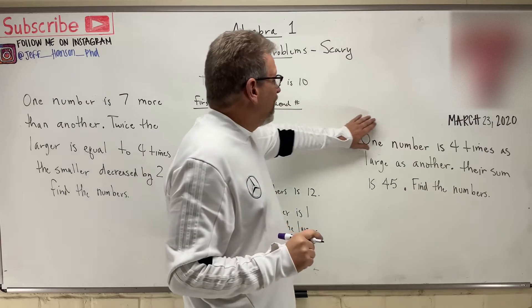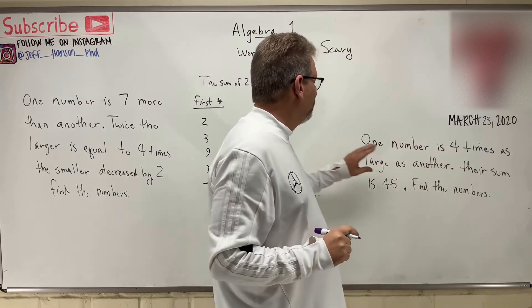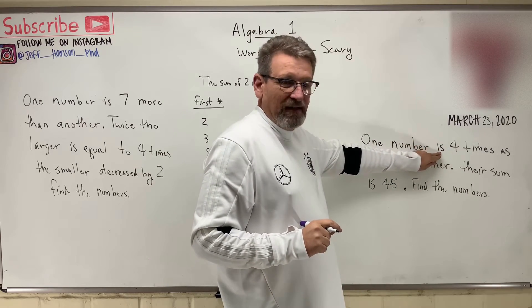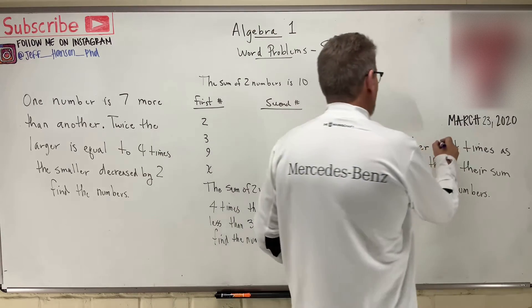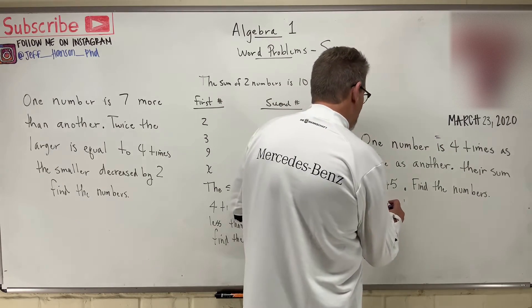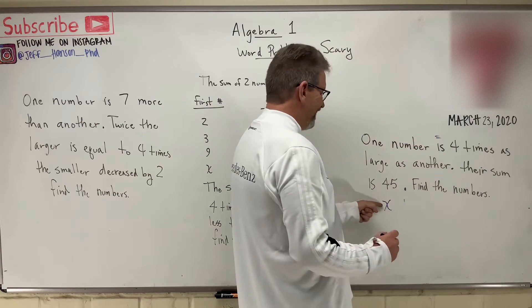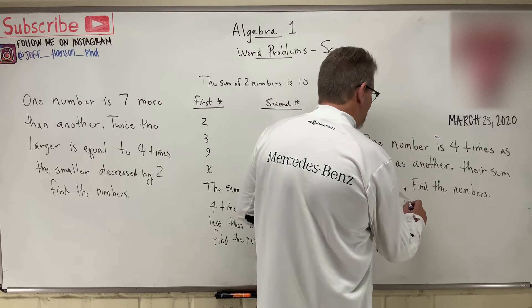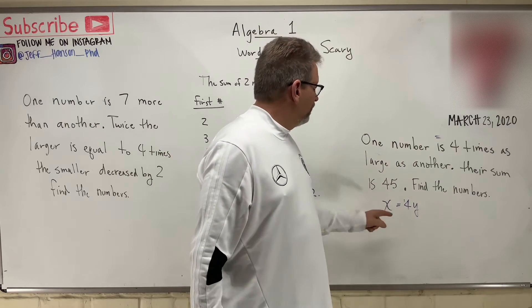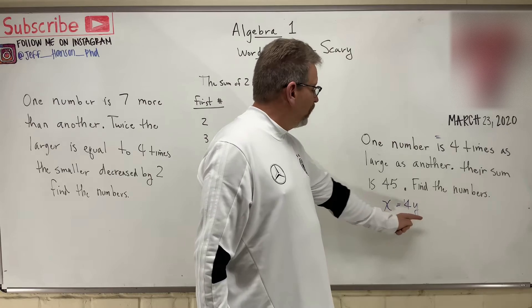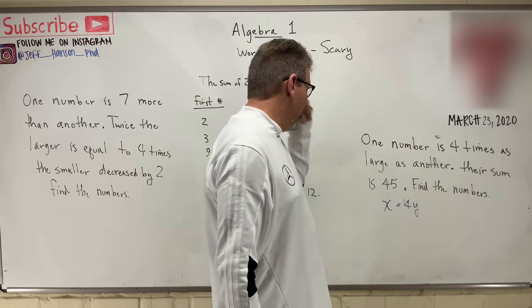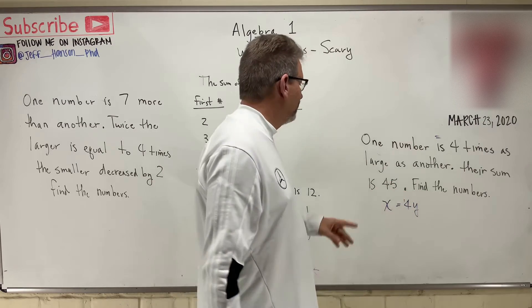Number one, one number is four times as large as another. When you see the word 'is' just think equals. So let's make some variables for this equation. One number X is four times as much as another number. So X equals four Y. That's an equation. Let's keep going.